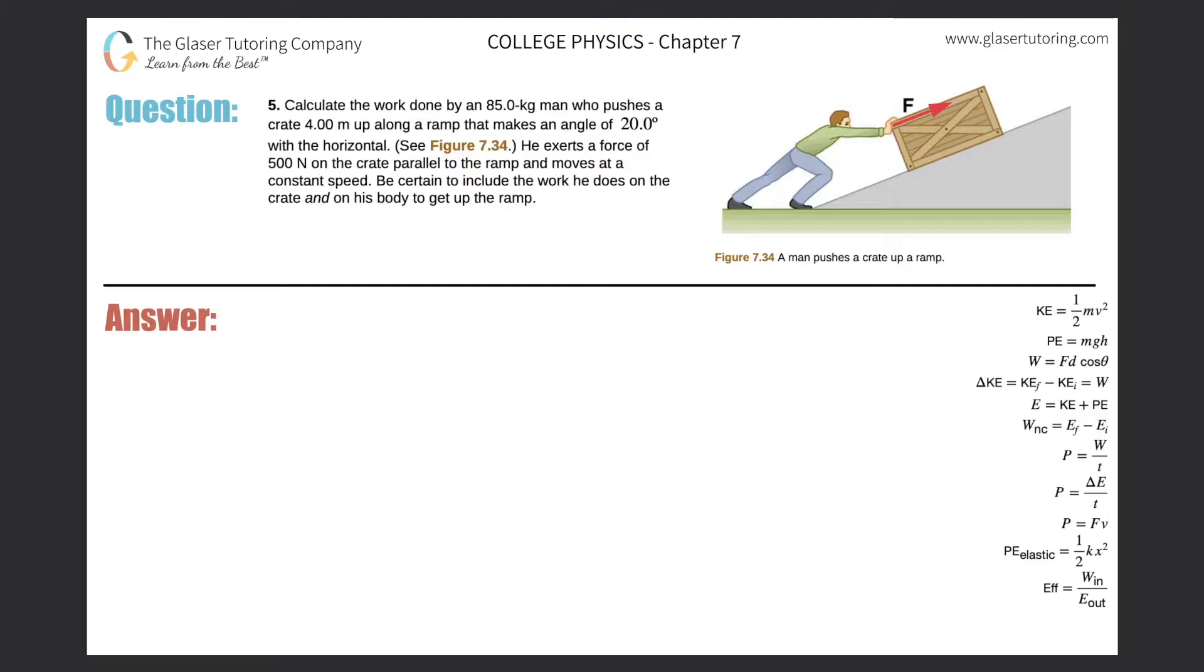Number five: Calculate the work done by an 85 kilogram man who pushes a crate four meters up along a ramp that makes an angle of 20 degrees with the horizontal. He exerts a force of 500 newtons on the crate parallel to the ramp and moves at a constant speed. Be certain to include the work he does on the crate and on his body to get up the ramp. All right, so here's our picture. There's two things going on.